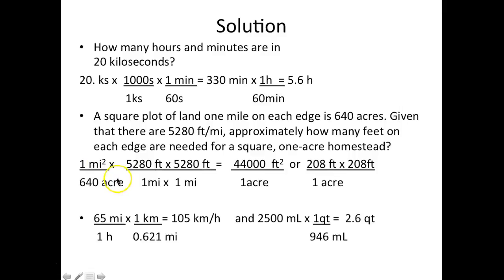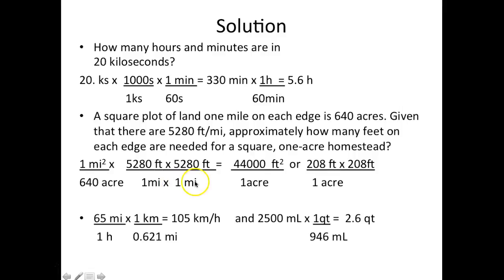The second problem involves a square plot of land that is one mile on each edge, which equals 640 acres. So one square mile equals 640 acres. In one mile there are 5,280 feet, and I want to eliminate the square mile unit.